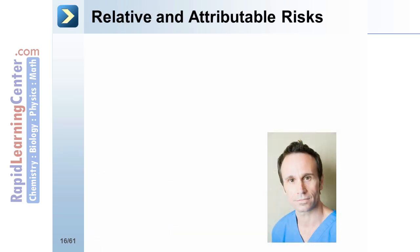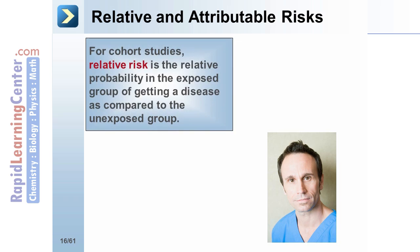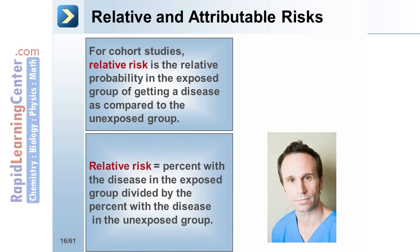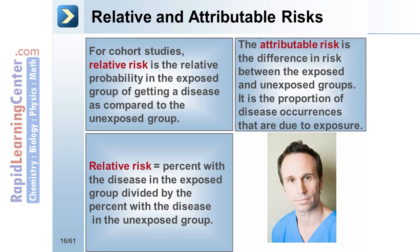For cohort studies, relative risk is the relative probability in the exposed group of getting a disease as compared to the unexposed group. It is equal to the percent with the disease in the exposed group divided by the percent with the disease in the unexposed group. The attributable risk is the difference in risk between the exposed and unexposed groups. It is the proportion of disease occurrences that are due to exposure.